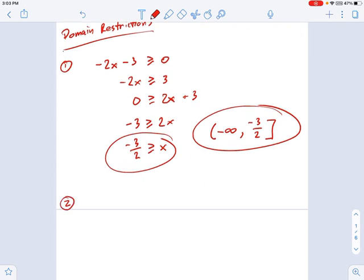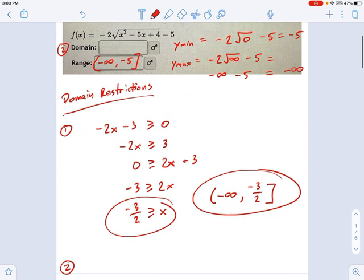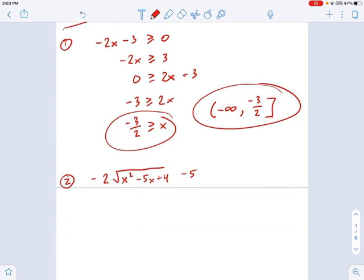Let's try number 2. This one's a little more complicated. This is a lot more complicated. Negative 2, I'm just going to write this again over here. x squared minus 5x plus 4 minus 5. Okay, what's the restriction? Remember, it's the domain restriction that's important. x squared minus 5x plus 4 must be either a positive number or 0. If it's negative, you're square rooting a negative. That's bad.